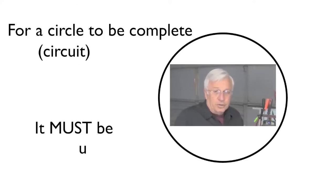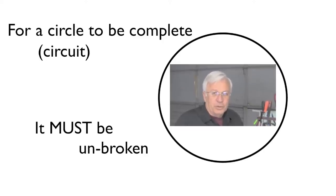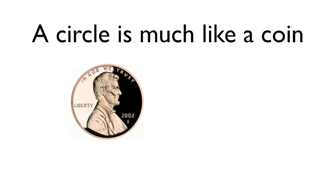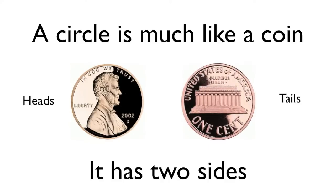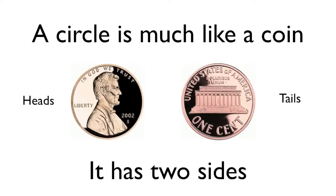The circle, or the circuit, must be complete or nothing is going to work. A circle is a lot like a coin. It has heads and tails, two sides. And a circuit has two sides as well. It has the power and the ground.